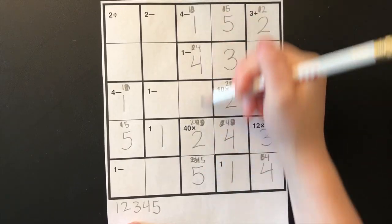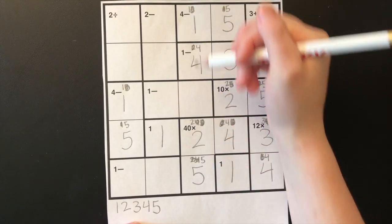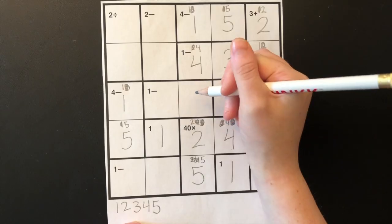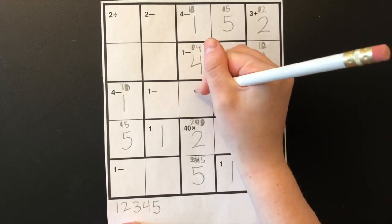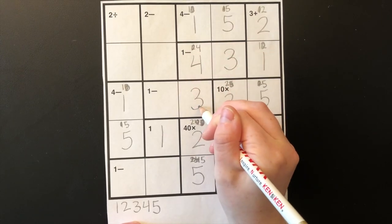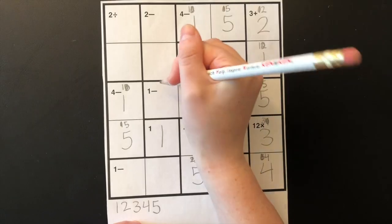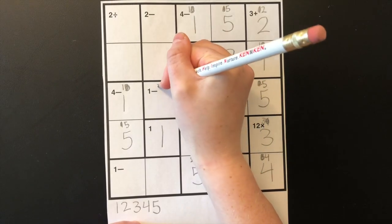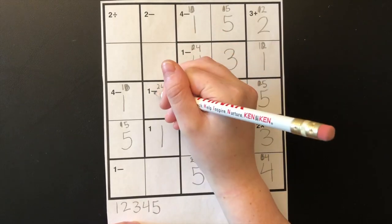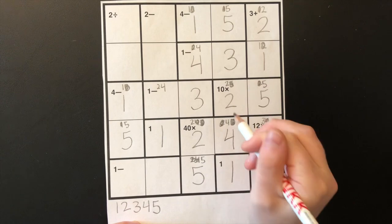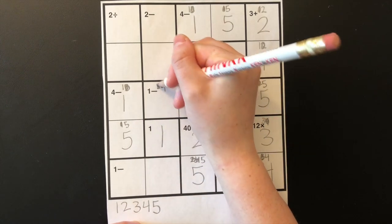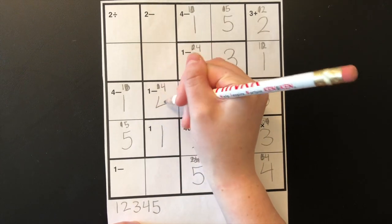Now I can finish this column. I see one, two, four, and five, so this box has to be a three. If this box is a three, then this box again has to be a two or a four — four minus three or three minus two. There's already a two in this row, so this can't be a two; it must be a four.